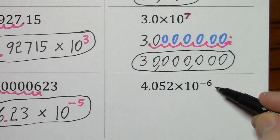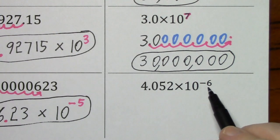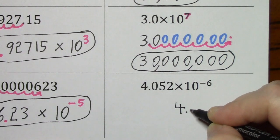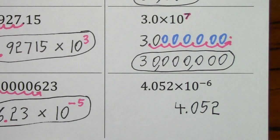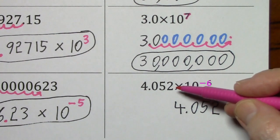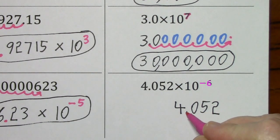And looking at our last example, notice we have a negative exponent here. So we'll start with 4.052. But because this exponent's negative, we know that we're talking about a very small number. So I will make this 4.052 smaller by six decimal places.